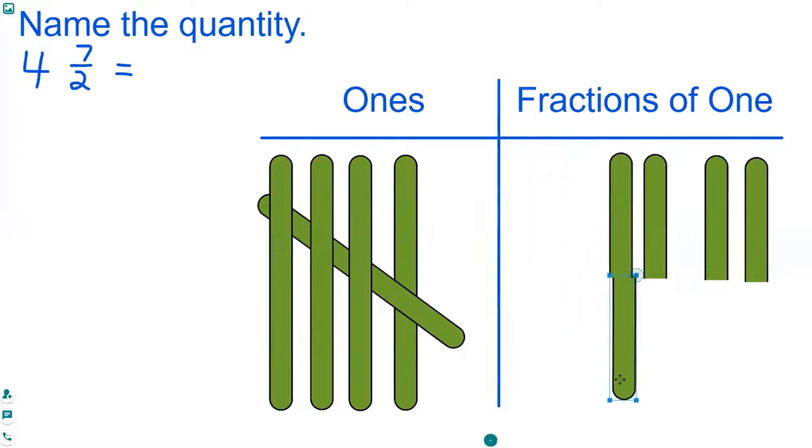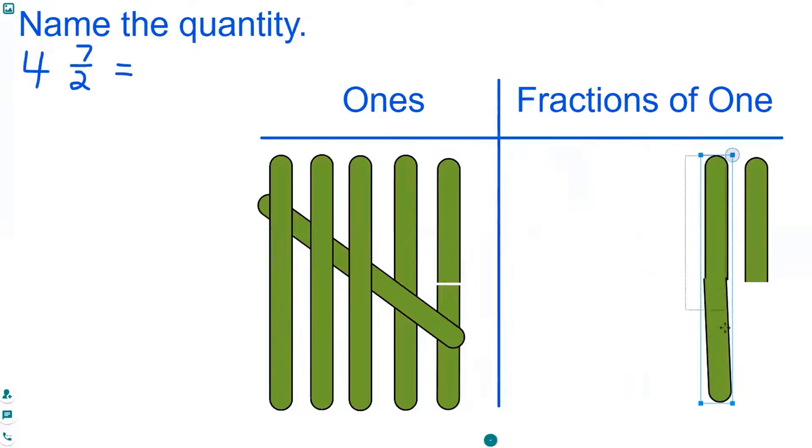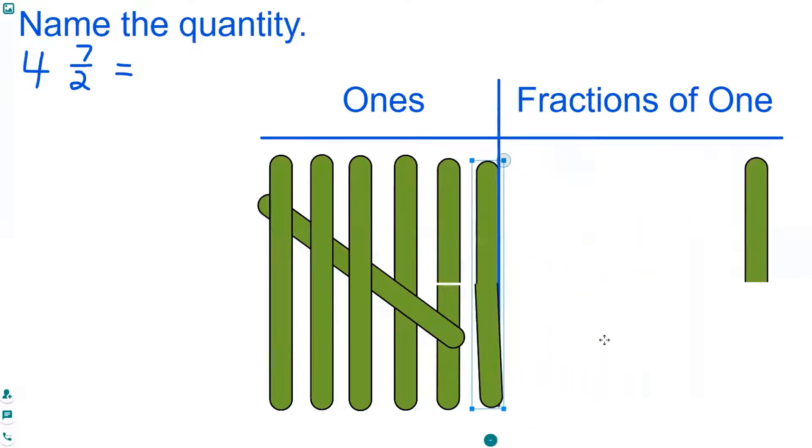The half pieces to make one, and then moves it into the ones column. Again, we read the quantity out loud, naming what it's made of.